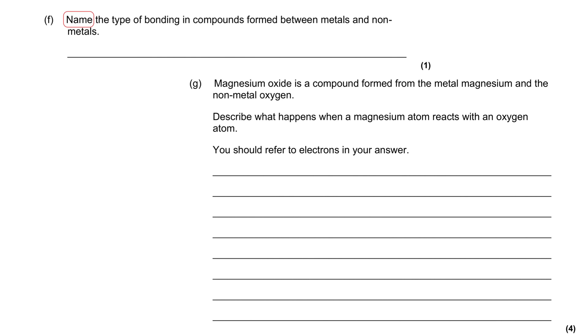Name the type of bonding in compounds formed between metals and non-metals. This is something that you could just simply remember, but you could also work it out.